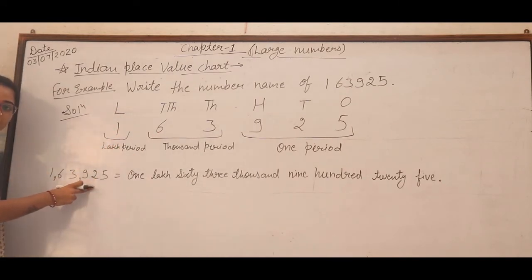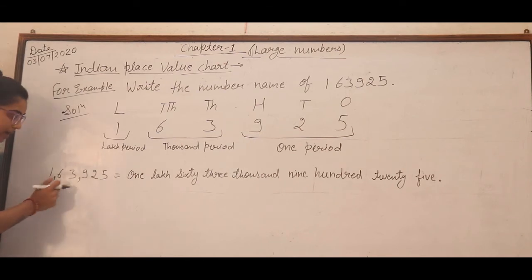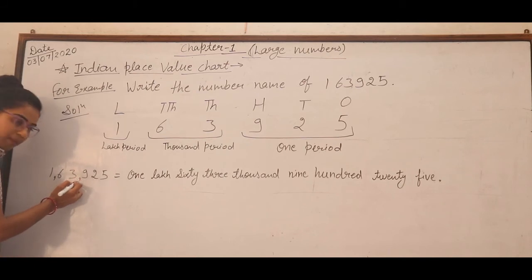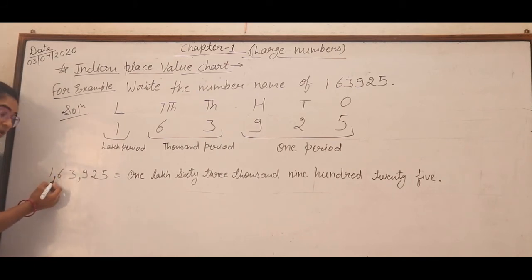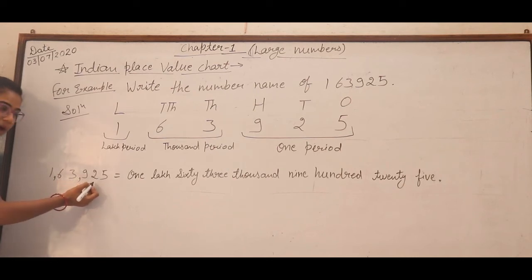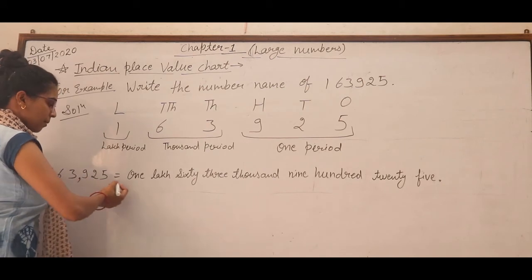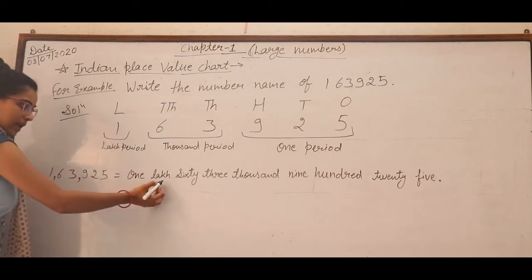We put commas to separate the periods. Here we put comma: 1 lakh, then comma, then 63 thousand, then comma, then 925 in the ones period. Now we write the number name of this number: one lakh sixty-three thousand nine hundred twenty-five.